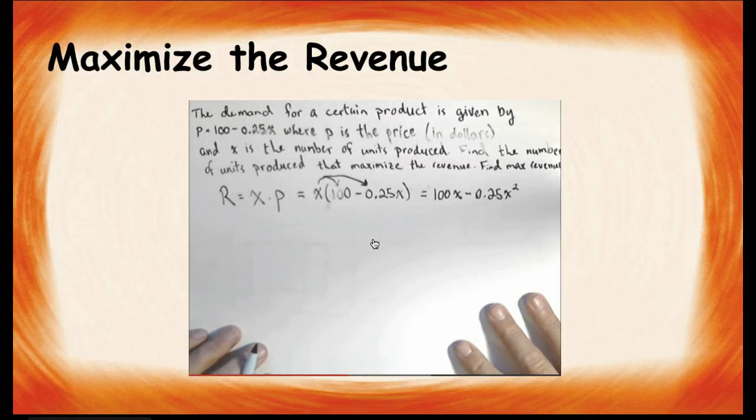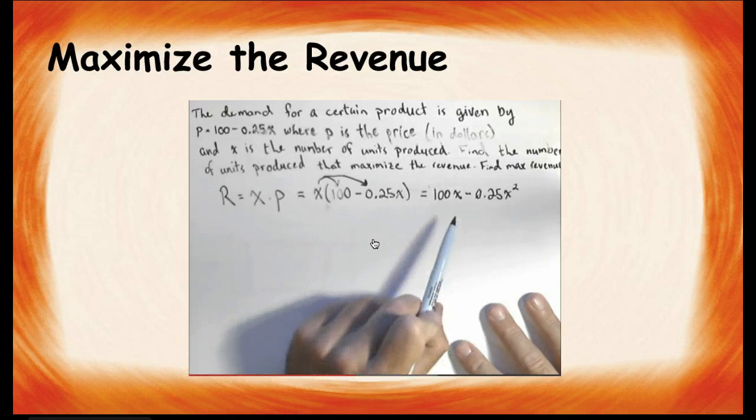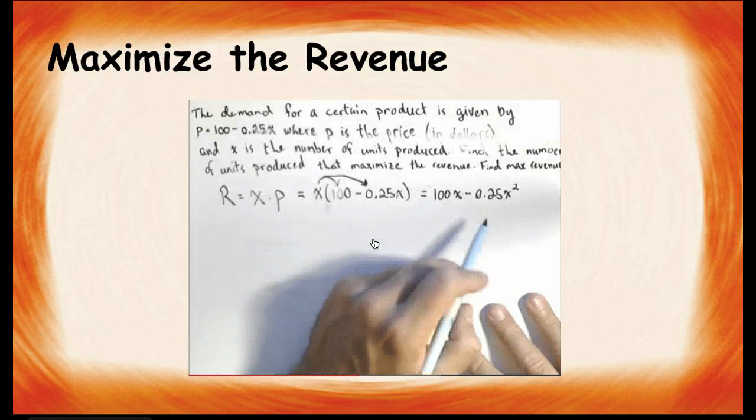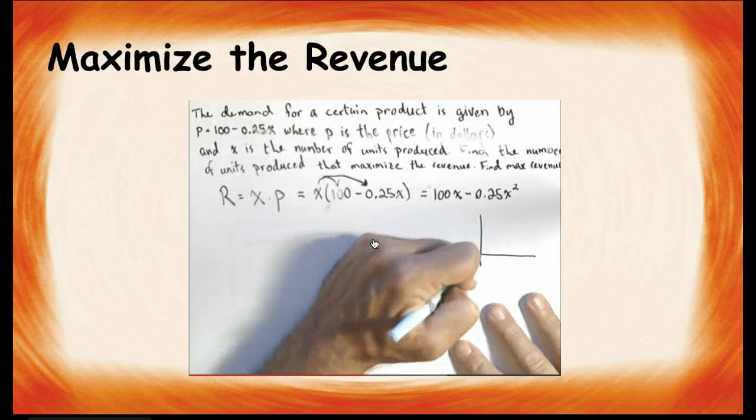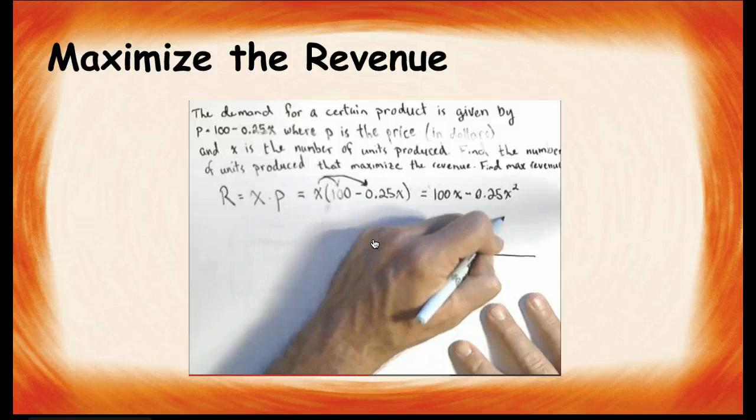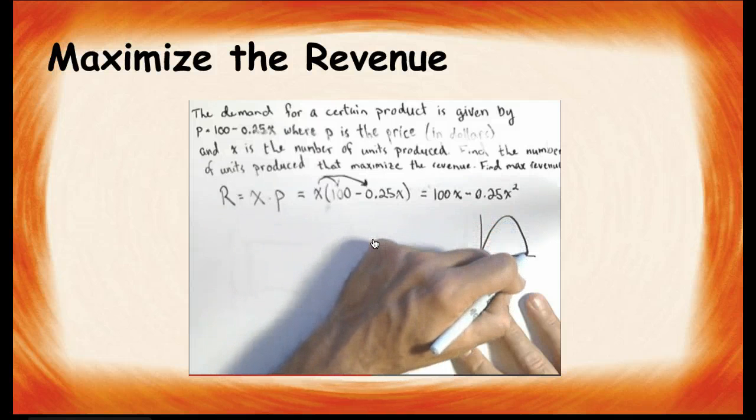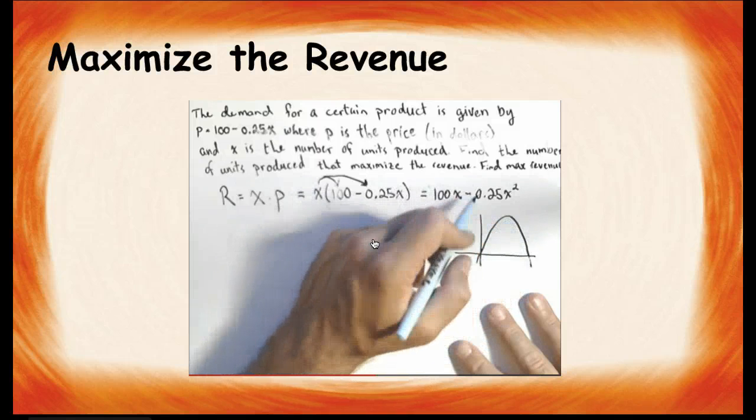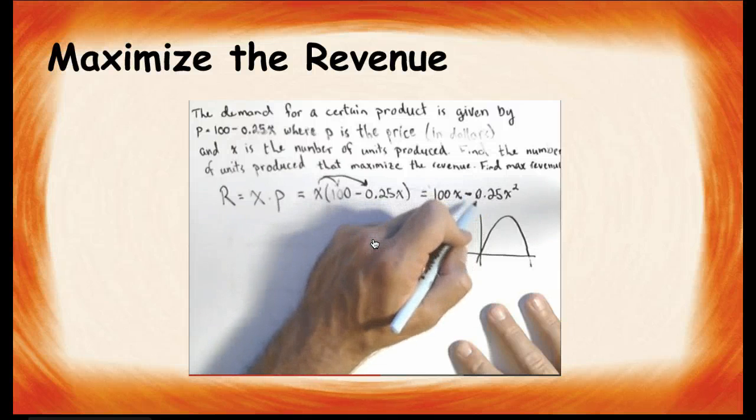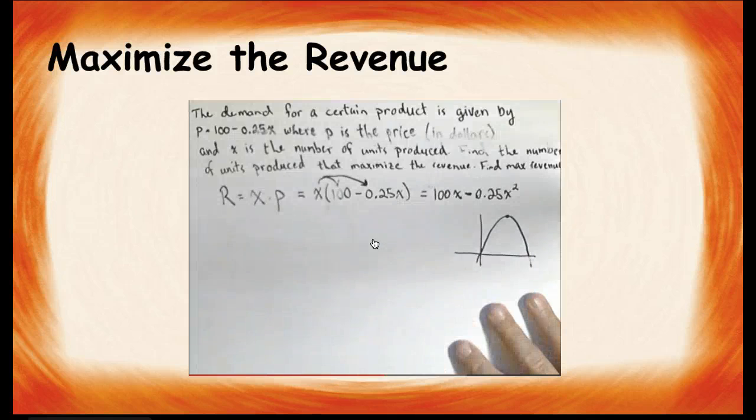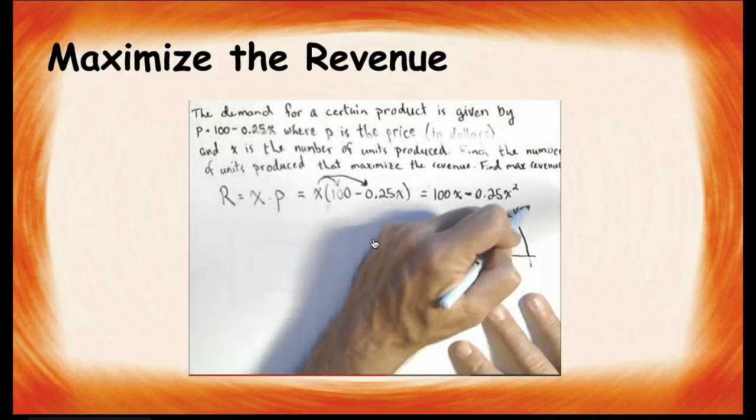Now, what we need to do is maximize the revenue. We have a quadratic. Remember what the graph of a quadratic looks like. This thing is going to have a graph that goes through 0, 0, because if you see when x is 0, the revenue is 0, and comes back down. I know it's going to open downwards because my a value is negative. So, the maximum revenue is going to be right here at the vertex.